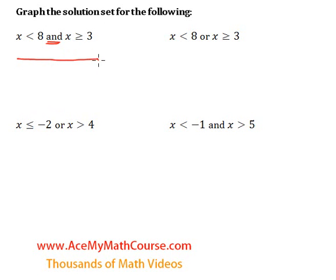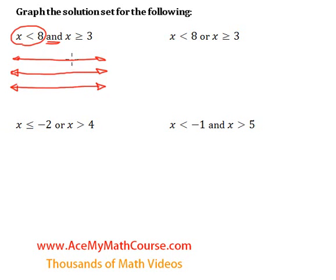What we're going to need to do is essentially draw three number lines on top of each other. On the first number line, we're going to take a look at x is smaller than 8. Put the 8 over here and note that it's an open dot, because x is smaller than 8 but not including 8. So we shade the area to the left of 8.